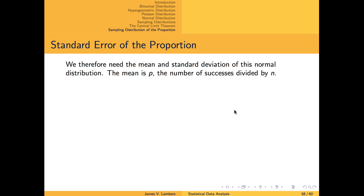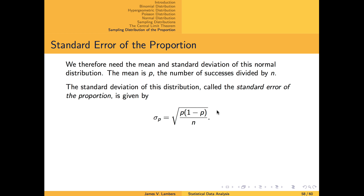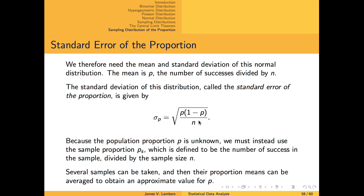It follows that if p is the true population proportion, then the mean of the sampling distribution of a proportion should be p. And the standard deviation should be the square root of p times (1 minus p) over n, which is called the standard error of a proportion. However, if p is unknown, then we need to use the sample proportion, p sub s, in its place as an approximation.